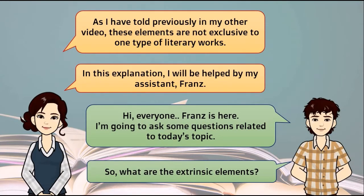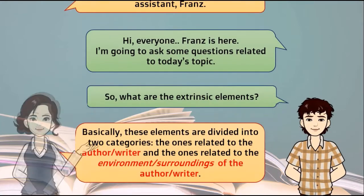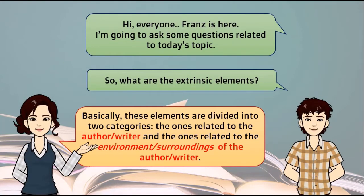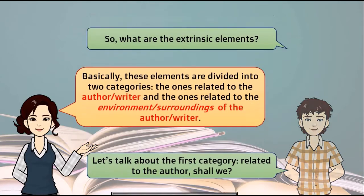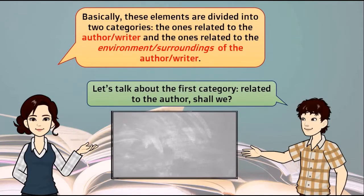So what are the extrinsic elements? Basically, these elements are divided into two categories: the ones related to the author or writer, and the ones related to the environment or surroundings of the author or writer. Let's talk about the first category related to the author.